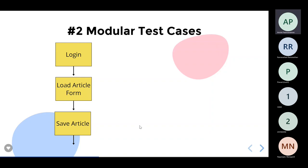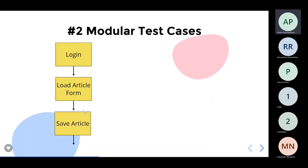Tip number three: just as we have modularity in writing application code, test cases can also be modular. For example, when testing editing an article, we could put everything in a single test case. But a better option would be: login is a separate test, loading the article form is a separate test, and saving the article is a separate test. This is what we mean by modular test cases.